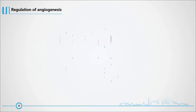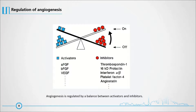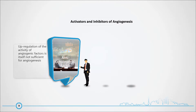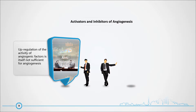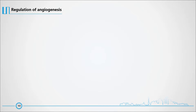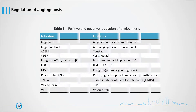Angiogenesis is regulated by a balance between activator and inhibitor molecules. However, upregulation of the activity of angiogenic factors is itself not sufficient for angiogenesis of the neoplasm. Negative regulators or inhibitors of vessel growth need to also be downregulated. A number of molecules are involved in these complex angiogenic cascades, whose names and functions are described briefly in the next section and listed in Table 1.